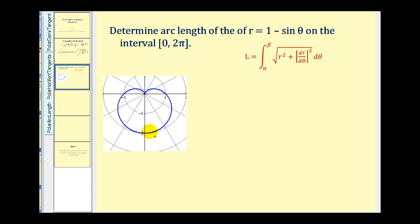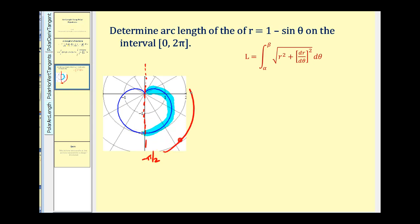We'll set it up to find the arc length from here to here, and then we'll multiply by two. So we'll start integrating here and stop integrating here. Our lower limit of integration is going to be −π/2, and our upper limit of integration is going to be +π/2.